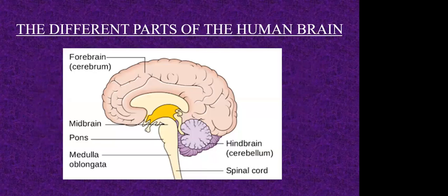This is a diagram which shows the three major parts of the human brain. There is the forebrain, which consists of the cerebrum; the midbrain, which consists of the tectum; and the hindbrain, which consists of the pons, medulla oblongata, and cerebellum. And obviously, there is the spinal cord. I would like to tell you about each of these structures in a little bit of detail.